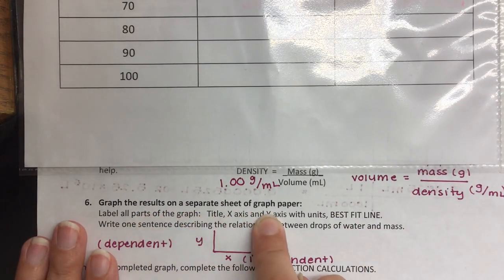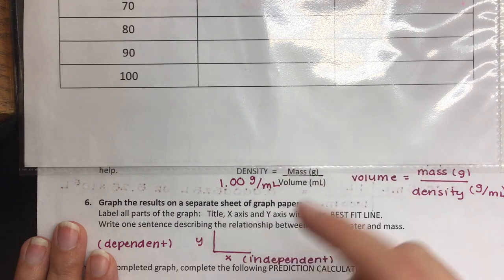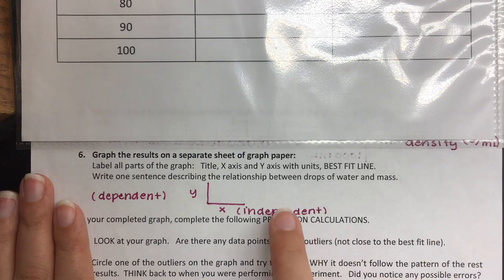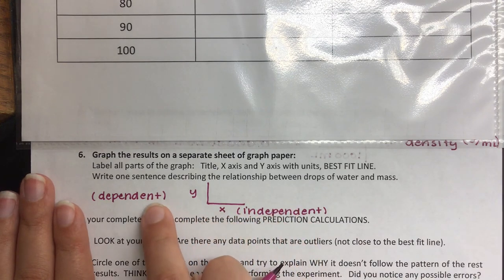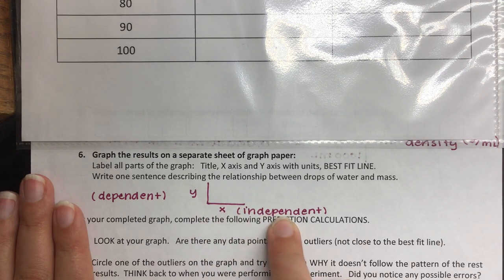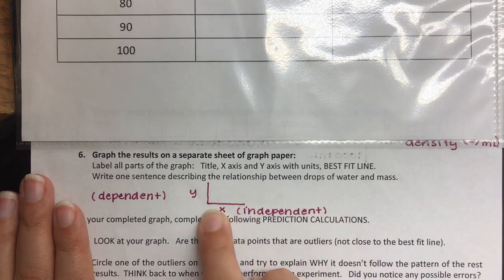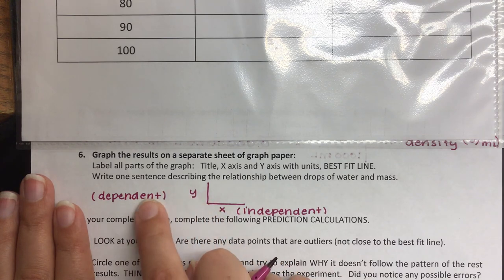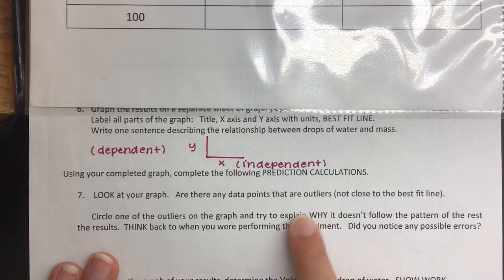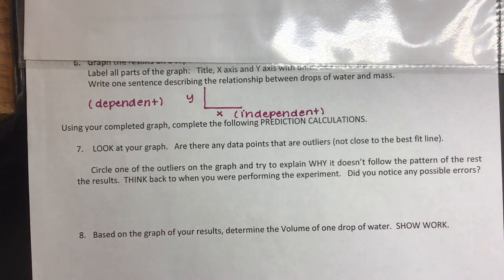I will then graph my results on a separate sheet of graph paper, or you can do it on Notability. Label all parts of the graph and include your best fit line. I want you to write one sentence describing the relationship between drops of water. Remember: independent is always your x value and dependent is always your y value. A good way to remember — when you break up with someone, they become your x, but you become independent. Your dependent is your y. Once you create your graph, you'll be able to answer the predictions and talk about your results.